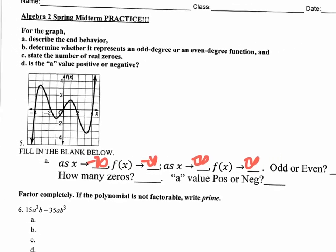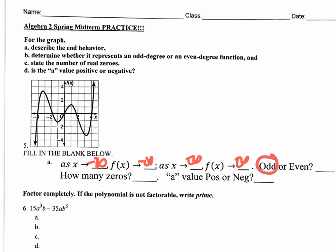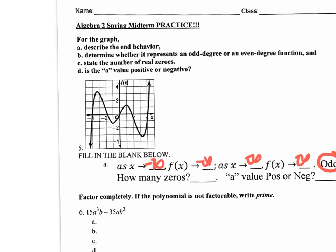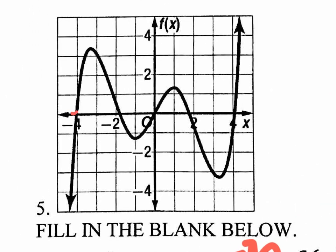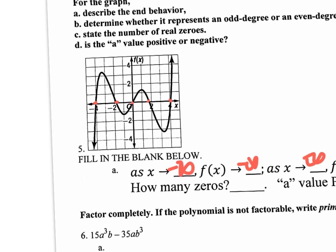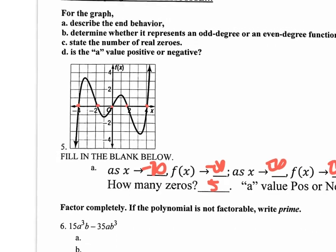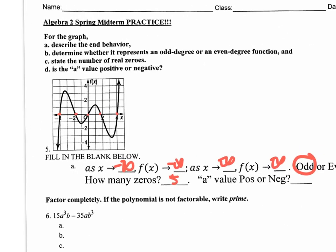We already said this is an odd degree function. How many zeros does it have? Zeros are x-intercepts: there's one around negative four, one near negative one, one at zero, one around 1.8 or 1.9, and one a little more than four — a total of five zeros, meaning five real answers. The a value is positive. A negative a value would reflect the curve on the x-axis, flipping the end behavior. This is the original snake-like cubic curve with a positive a value.